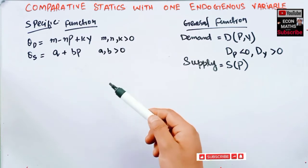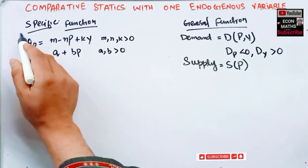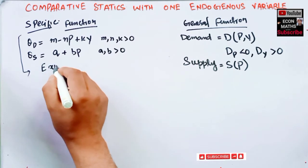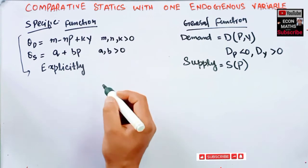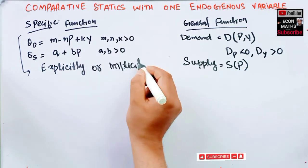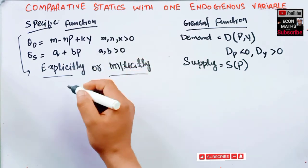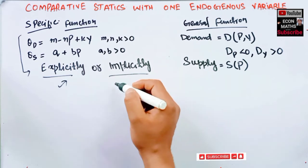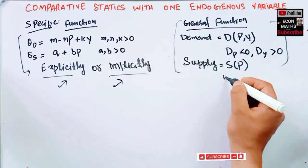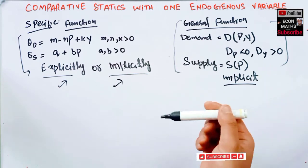We can use comparative statics with both specific and general functions. Specific functions can be solved in two ways: explicitly or implicitly. However, the general function can only be solved using the implicit method.